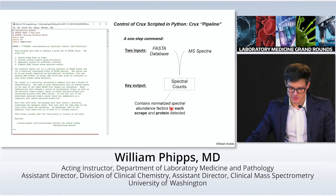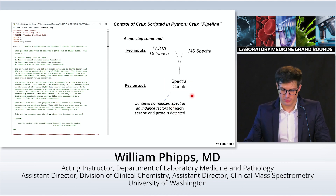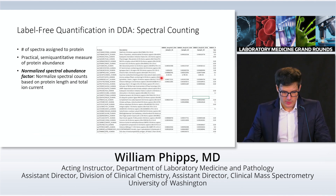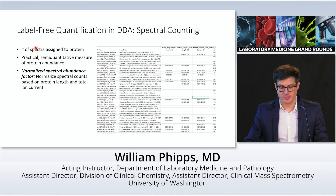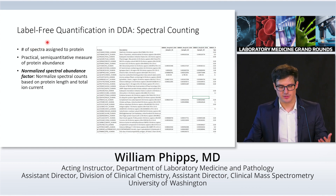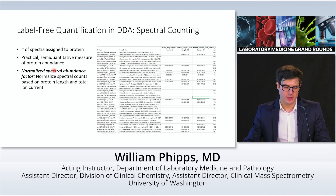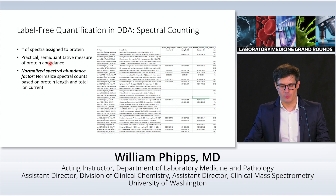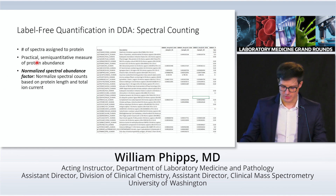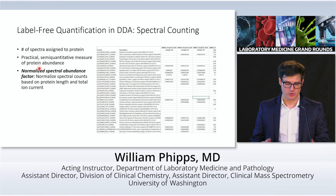A spectral count is the number of spectra assigned to one protein in the database — a practical semi-quantitative measure of protein abundance. We use normalized spectral abundance factors because larger proteins contain more peptides and will have more spectra mapped against them based on size alone; NSAF normalizes to protein size so we're comparing proteins more fairly.